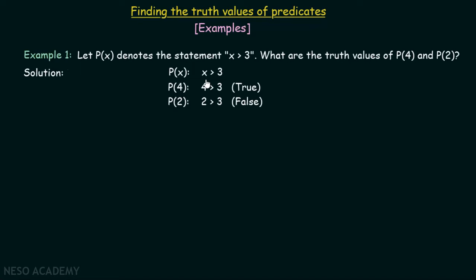And what about P(2)? Here in this case, 2 is not greater than 3. We just replace this x by 2, and after that the statement we got is 2 > 3, which is false. The truth value of P(2) is false.